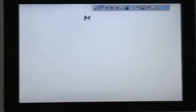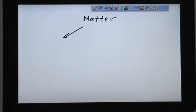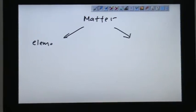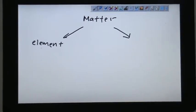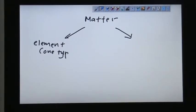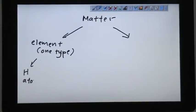So matter can be classified into a few categories. Let's categorize them to element and compound. When we say element, we are talking about particles of one type. If they exist as a single particle, we call them atom.